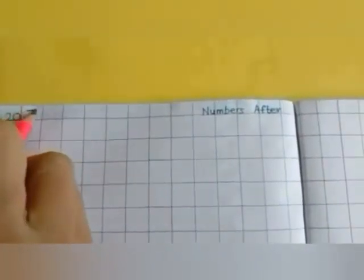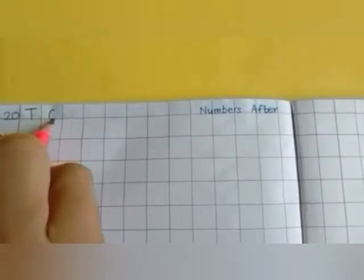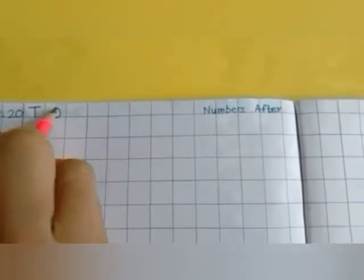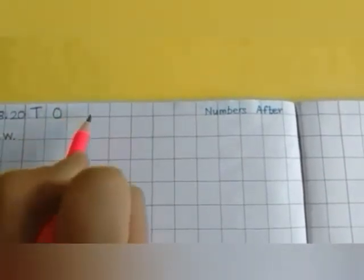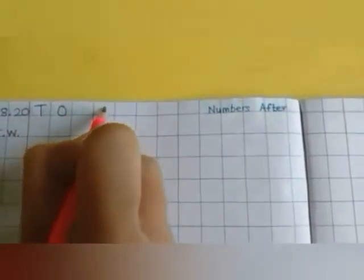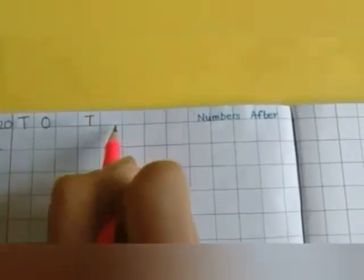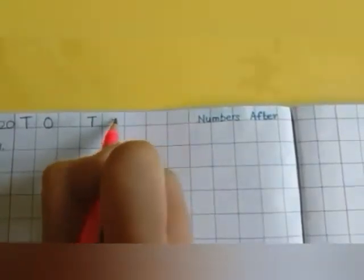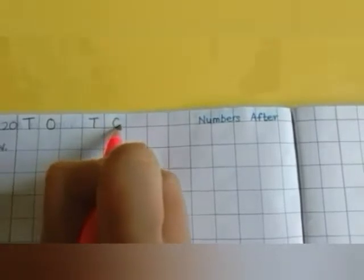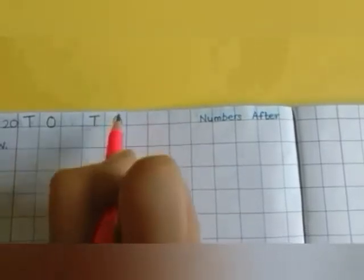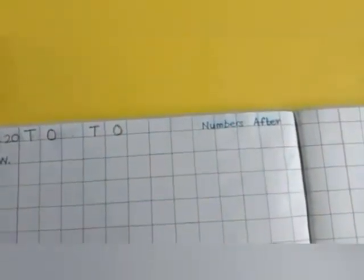So after the red line, in the first box we will write T. In the next box, write O. After O, leave one box and write T. And next to T, write O. Now we will start writing.